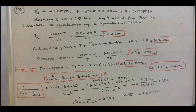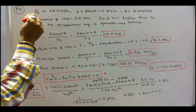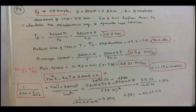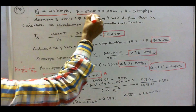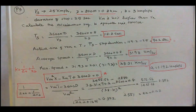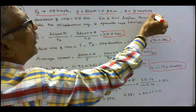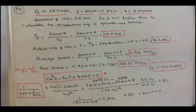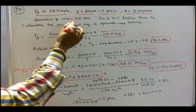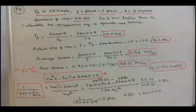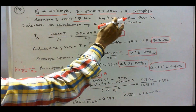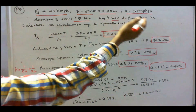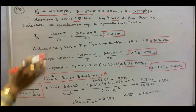In this problem, schedule speed is given as 25 km per hour, distance between stations is 800 meters equal to 0.8 km, retardation is 3 km per hour per second, and stop duration is 25 seconds. Maximum speed is 20 percent higher than average speed. We need to calculate the acceleration required.